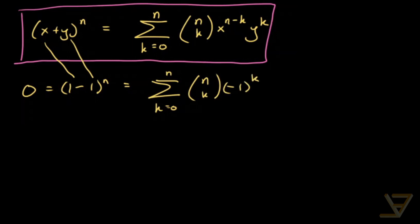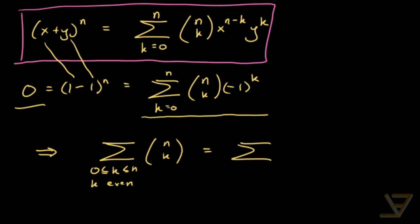And we have a 0 here and we have this sum with terms of alternating signs. So what that means is that the sum of n choose k with k between 0 and n and k even is equal to, if we take the negative signs to the other side, we have 0 less than or equal to k, less than or equal to n, k odd is equal to n choose k. So it gives us this nice identity in terms of binomial coefficients.